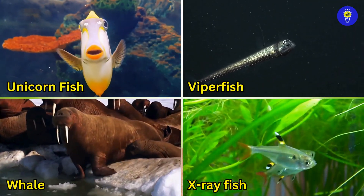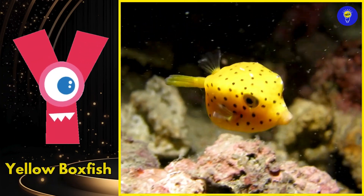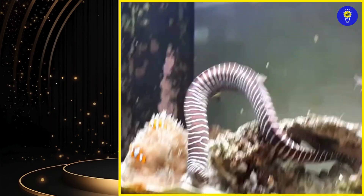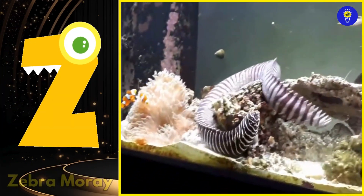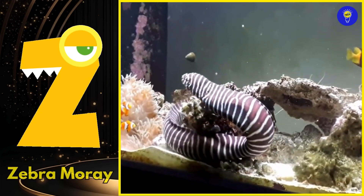Y is for yellow boxfish. Yuh, yellow boxfish. Z is for zebra moray. Z, zebra moray.